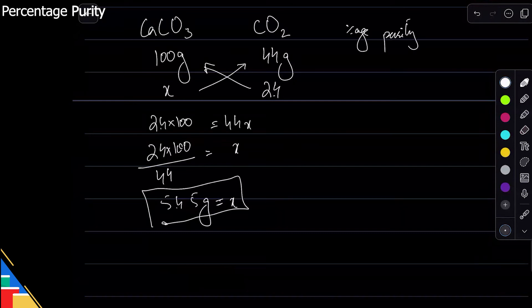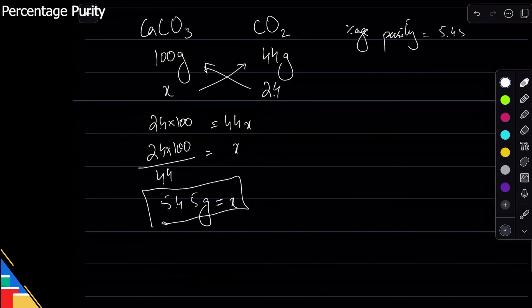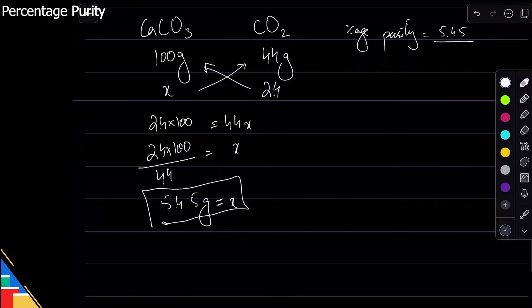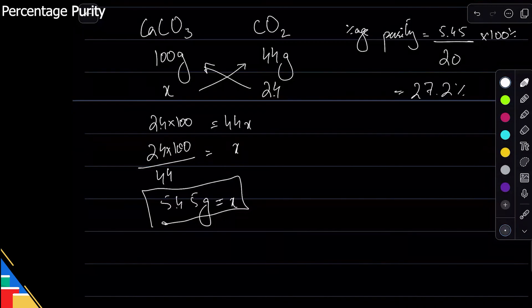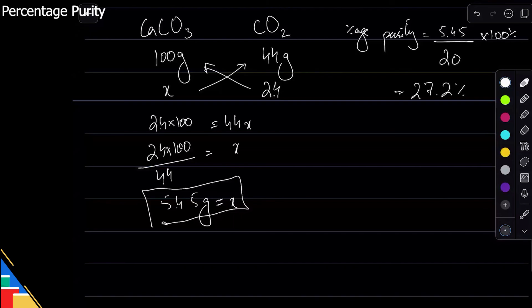So the percentage purity will be the mass you calculated yourself divided by the mass that they told you it was, times 100 percent. So clearly this is only 27.2 percent pure. Everything else was just impurity. Does that make sense?